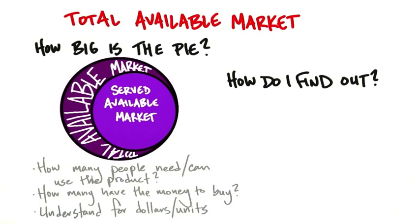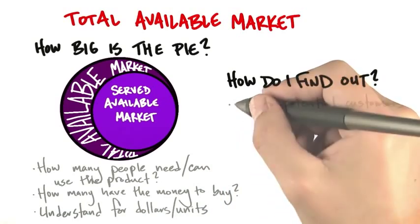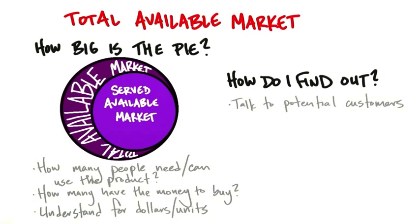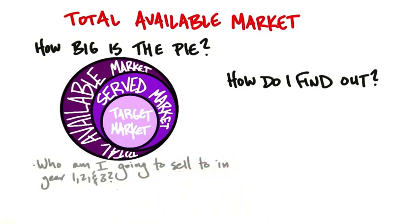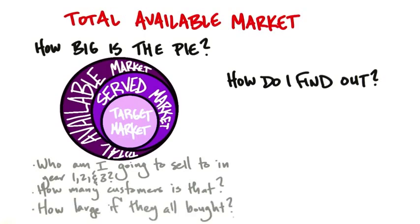How do you find out? This is where you're really getting out of the building and talking to customers. Using the pie analogy again: we narrowed from all people in the world, down to the number of Android-capable phones, then down to how many would buy at your price. Now we want to get very specific: who exactly am I going to sell to in years one, two, and three? How many customers is that? How large is the market if they all bought? What we're arriving at is the total number of dollars — if you had 100% market share, your revenue won't exceed this number.